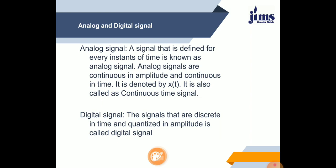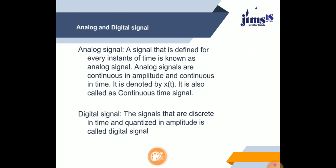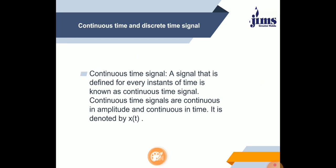Next is digital signal. Signals that are discrete in time and quantized in amplitude are called digital signals. Digital signals are also known as discrete signals. In a discrete signal, we can measure the value of amplitude of any quantity at a particular time.